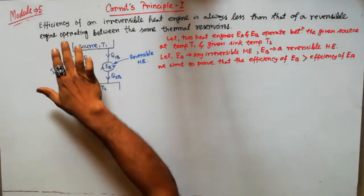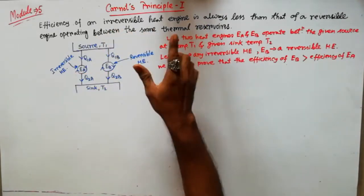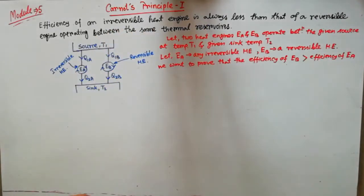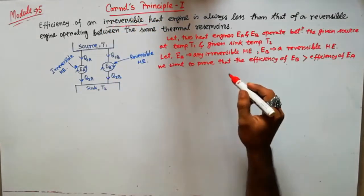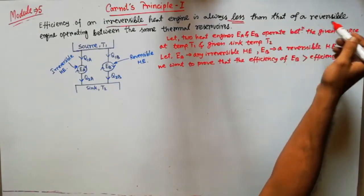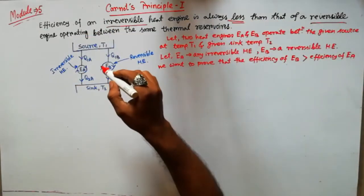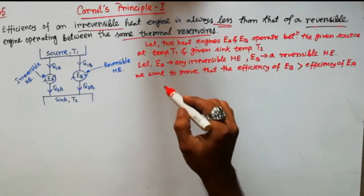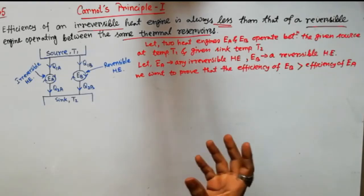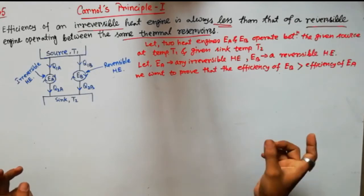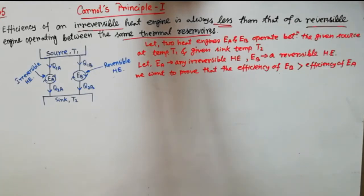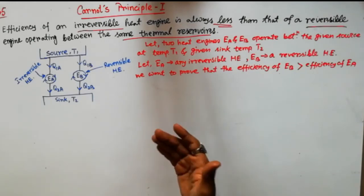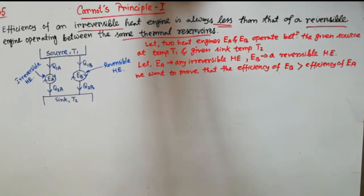The first principle states: the efficiency of an irreversible heat engine is always less than that of a reversible engine operating between the same thermal reservoirs. In easy words, if two heat engines — one reversible, one irreversible — are working under the same thermal reservoir, meaning the same source and sink, then the reversible heat engine must always have more efficiency than the irreversible one. That is the first Carnot's Theorem.